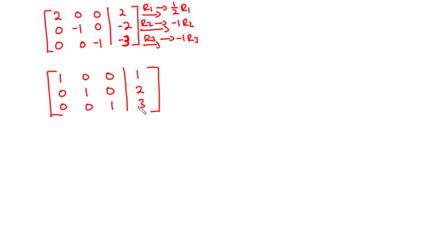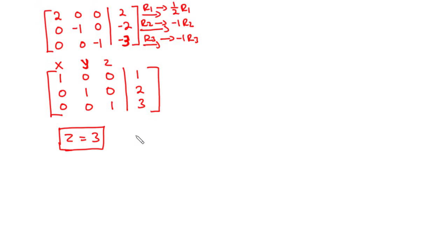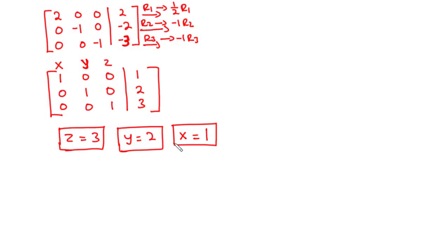We now have the x values, y values, and z values. By observation, z is equal to 3, y is equal to 2, and x is equal to 1. These are the values of x, y, and z.